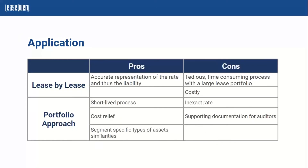In the application of using a discount rate at a portfolio level versus a lease-by-lease basis, there are obvious pros and cons. From the lease-by-lease standpoint, the obvious pros are going to be an accurate representation of the rate and thus the liability. You're using a rate specific to an asset you've assessed, giving you a more accurate representation of your liability and corresponding asset. From the portfolio approach, the obvious benefits are that it's a shorter, less time-intensive process and also a cost saver.